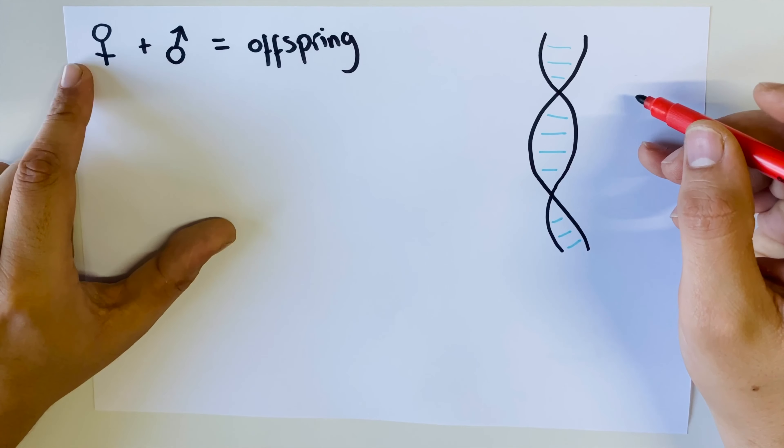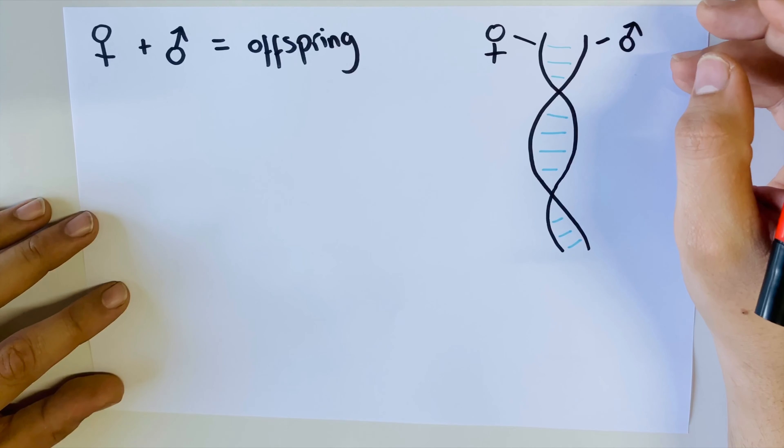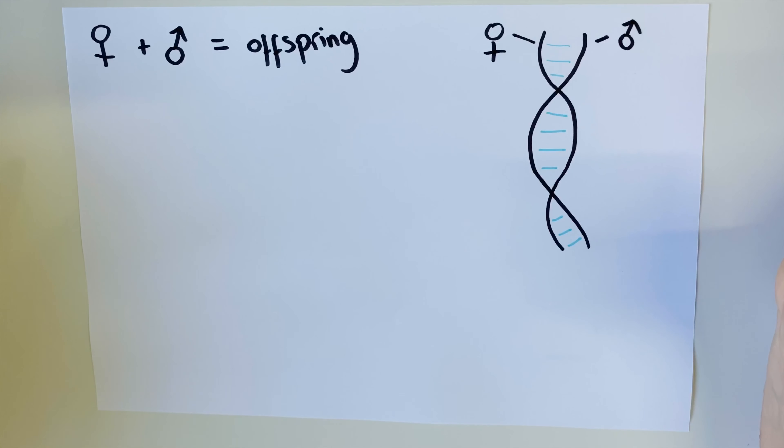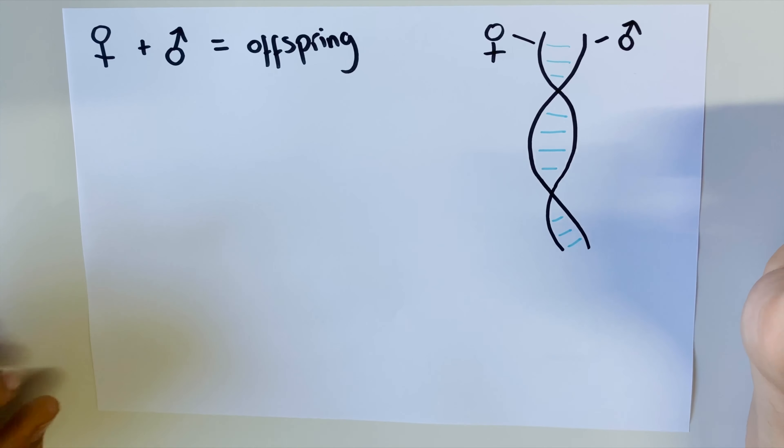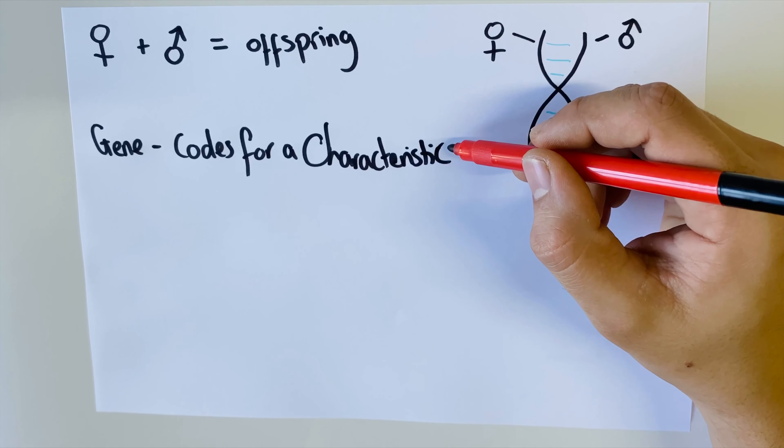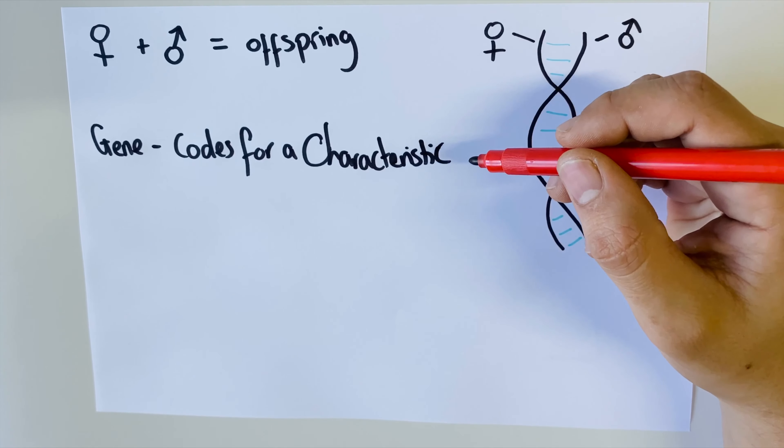So we're going to start our first episode today with an introduction to genetics. Genetics is the study of genes, and we're going to look at how genes work and how we inherit them from our parents. Generally speaking, when a female breeds with a male of any species, you produce an offspring — the scientific term for a child or baby — through sexual reproduction, where the sperm from the male fuses with the egg from the female.